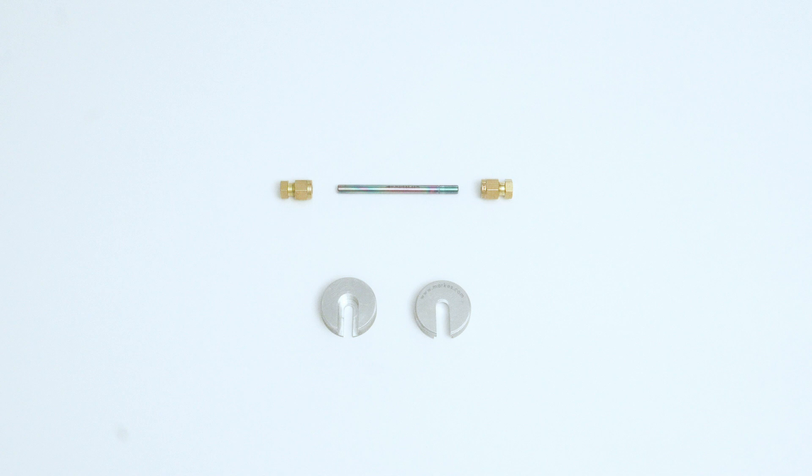The cap lock tool consists of two parts. The top is engraved with the Marks website address and the bottom is not. The bottom part of the tool has a deeper slot to house the bottom of the storage cap.